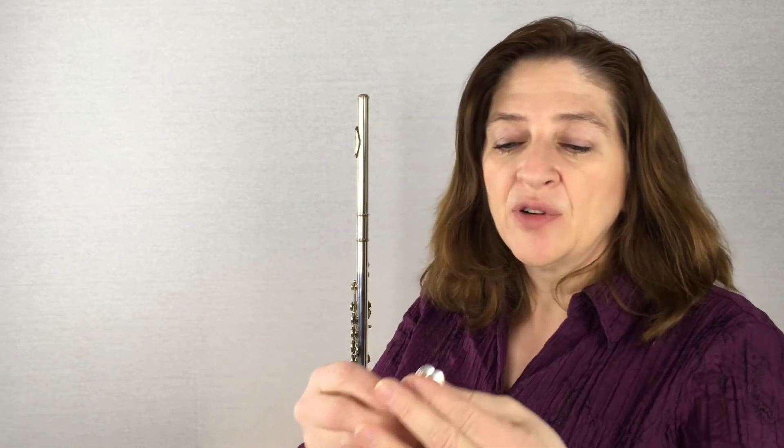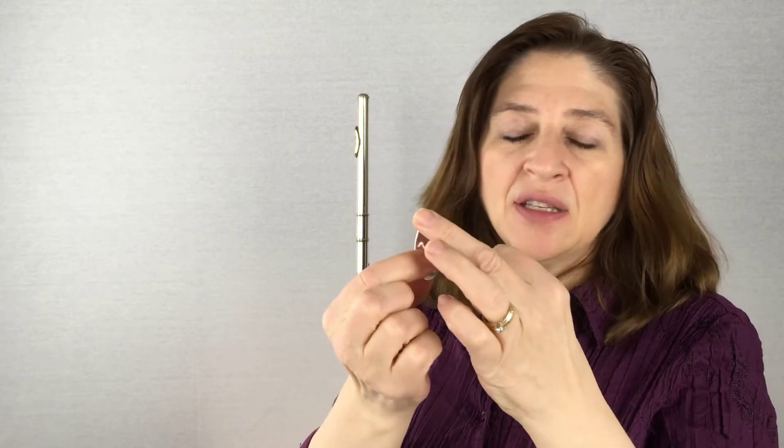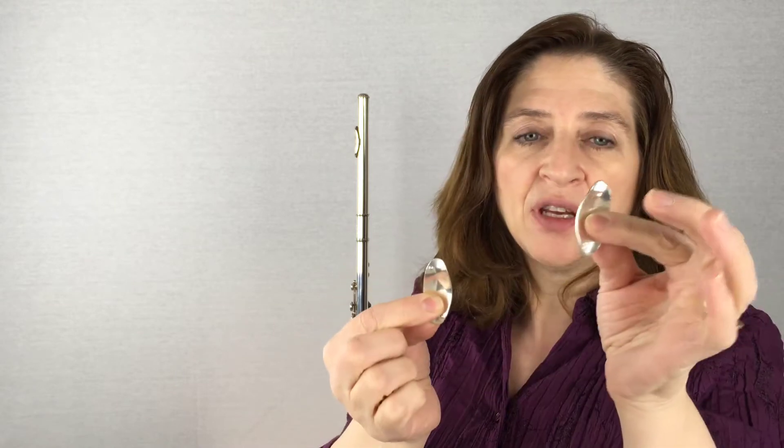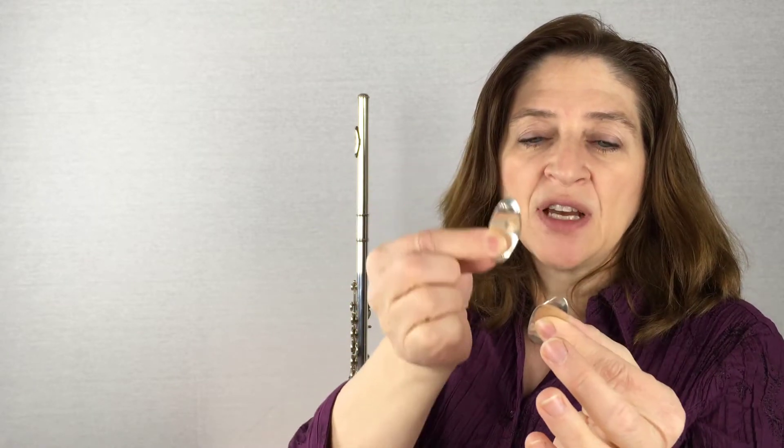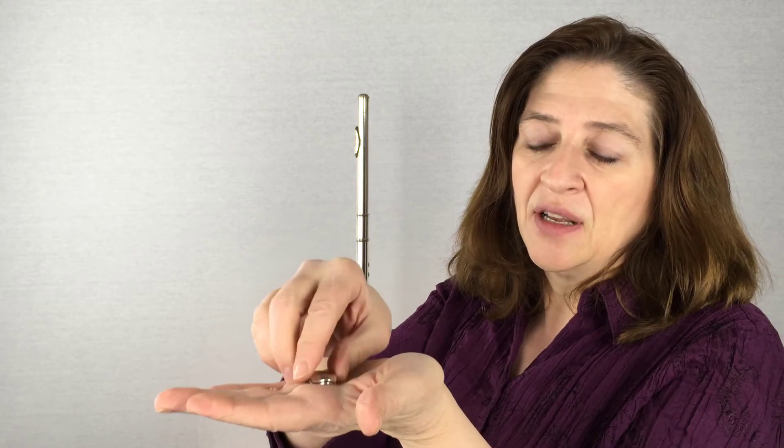Now if you haven't seen a lefreque before, they are these two little pieces of metal. One has these dots on it right there and the other doesn't. So the one with the dots goes on top of the one that doesn't, and they sit like this in the palm of your hand.